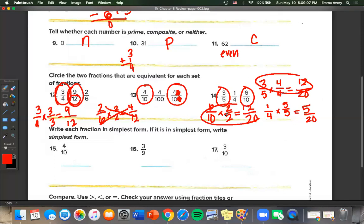Write each fraction in simplest form. If it is in simplest form, write simplest form. So number 15, 4 and 10 are both even, so I can divide each side by 2. That gives us 2 fifths. That is our simplest form. What about 3 ninths? Well, each of these are divisible by 3. So 3 divided by 3 is 1, and 9 divided by 3 is 3. So 1 third is our simplest form. Now what about 3 tenths? Well, the top is odd, but the bottom is even, so this one is in simplest form.